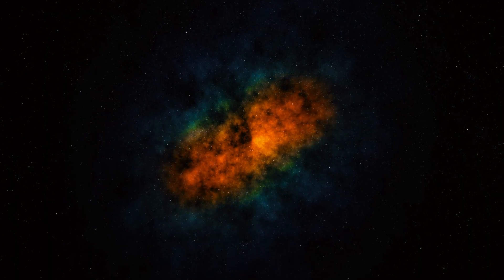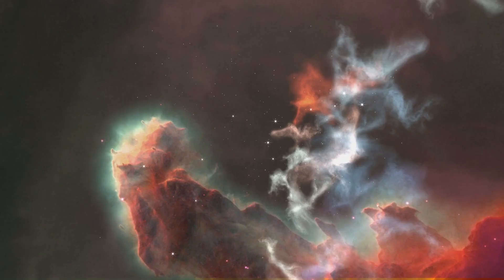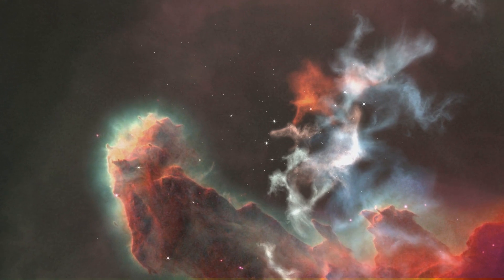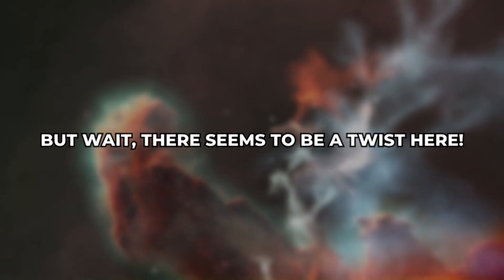So, the initial tiny differences in density combined with the expansion of the universe played a crucial role in shaping the large-scale structures we observed, including voids and galaxies. But wait, there seems to be a twist here. What if the Boötes void is not a void in the first place?